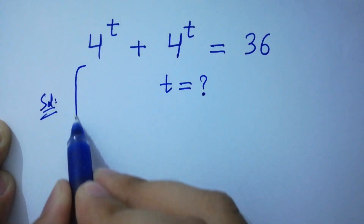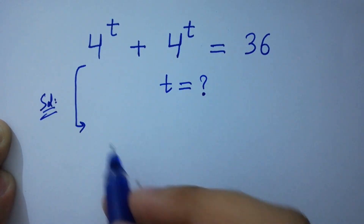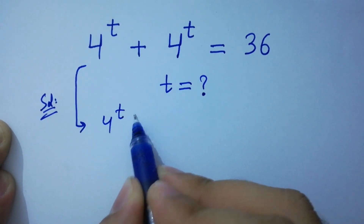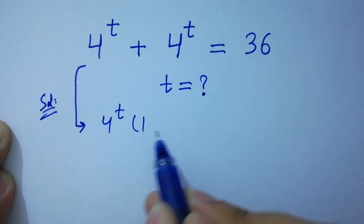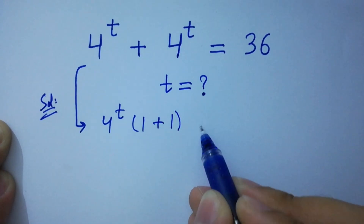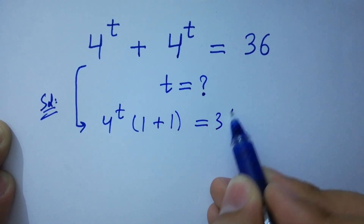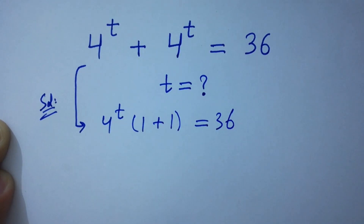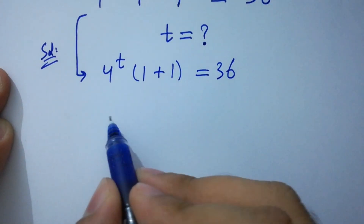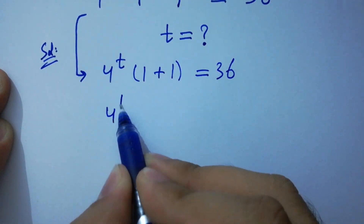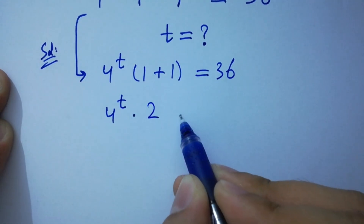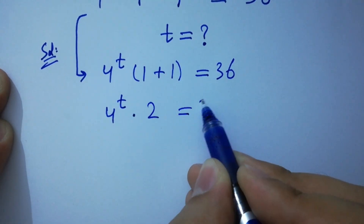Here, 4 to the power t can be common. We have 4 to the power t times (1 plus 1) equal to 36. Since 1 plus 1 is 2, we have 4 to the power t times 2 equal to 36.